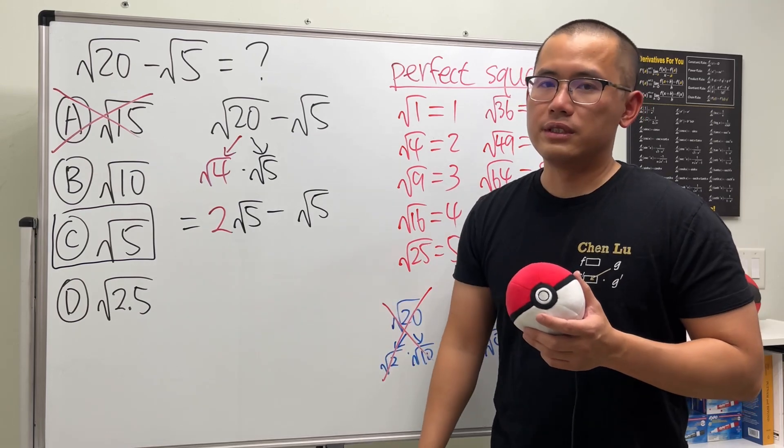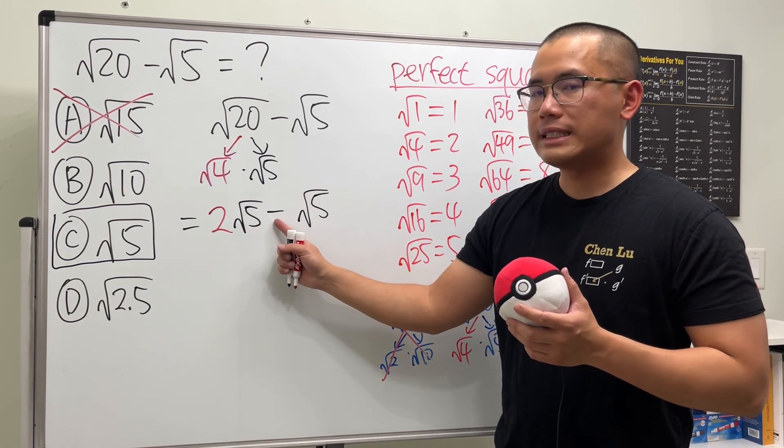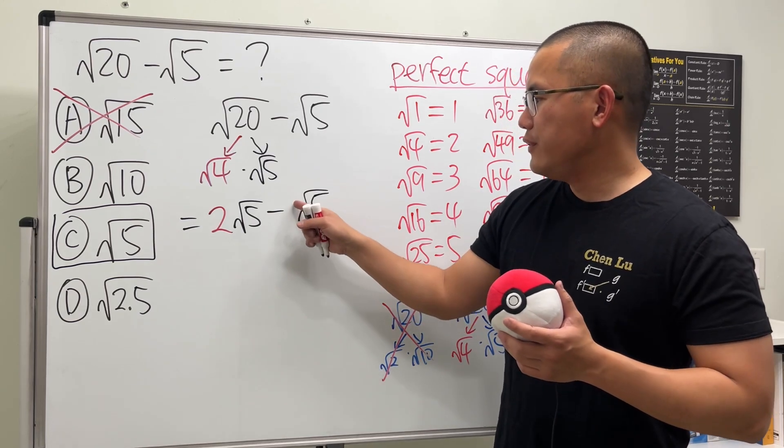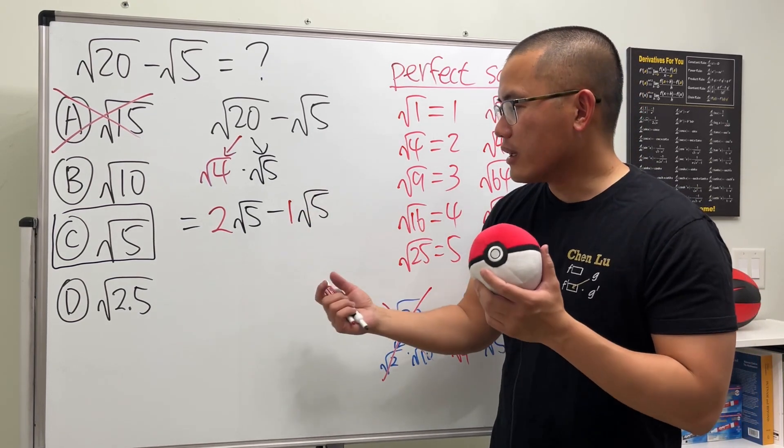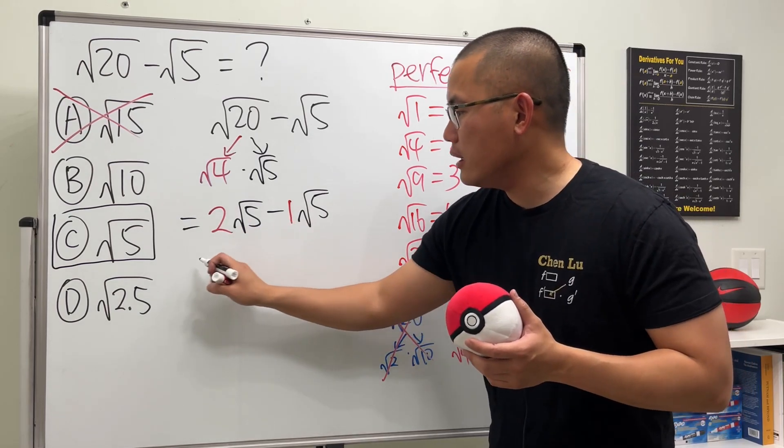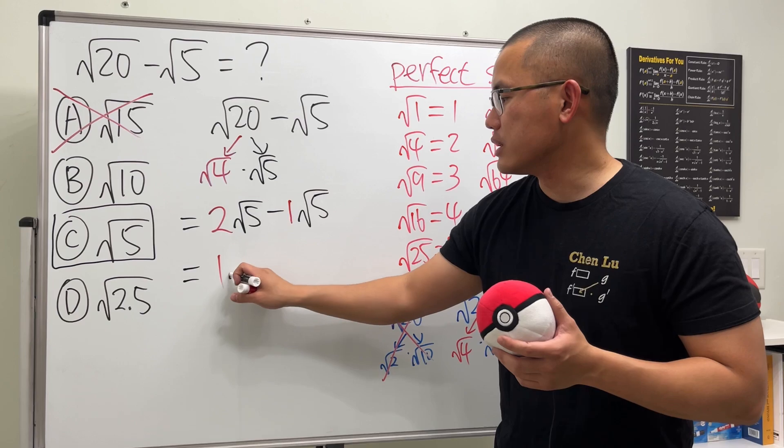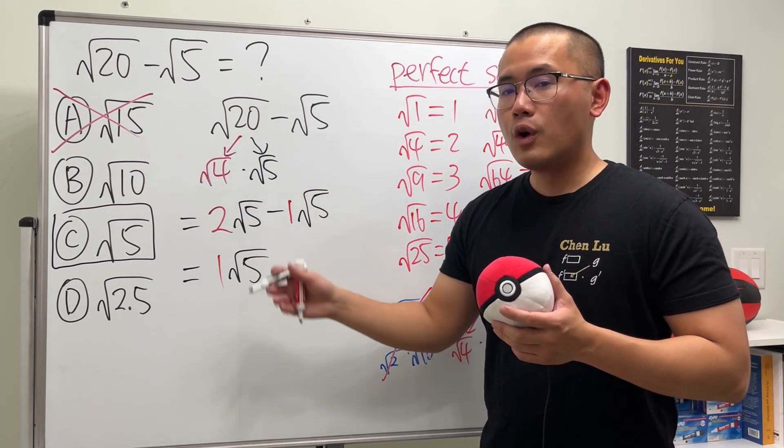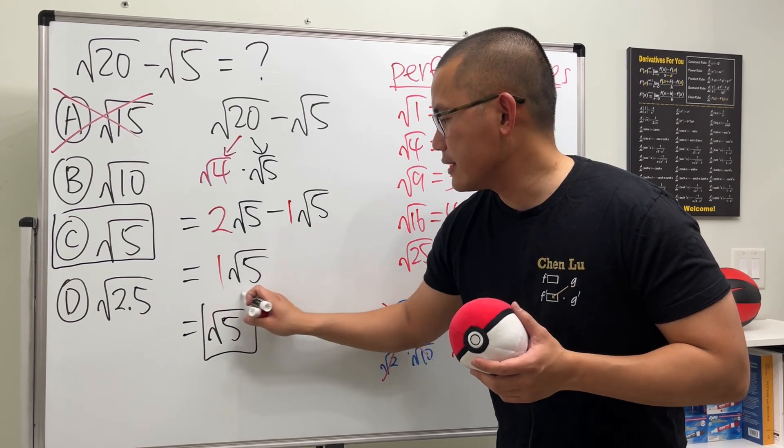Both of them are with square root of 5. This is 2 square root of 5. And we are subtracting 1, right? Because if you don't see any number here, it's technically a 1 right here. And how we can combine it is just 2 minus 1, which is 1. And then we maintain the square root of 5. 1 times square root of 5 is just square root of 5. Like this.